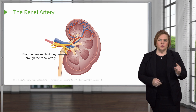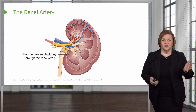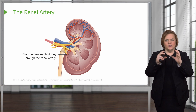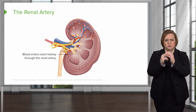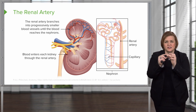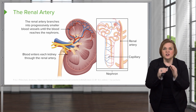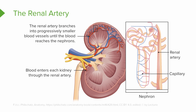Let's focus in on the renal artery. We know that blood comes to the kidney through the renal artery. The renal artery comes off the aorta and is smaller than the aorta. Then the renal artery branches into progressively smaller and smaller blood vessels until the blood reaches the nephrons. Look at that pop-out box — that's a nephron. The renal artery keeps branching into smaller and smaller vessels until it reaches the nephrons.